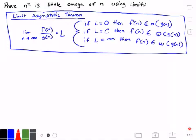Hello everyone and welcome to this video on algorithm analysis and more specifically on little omega. In this video we want to prove that n squared is little omega of n using limits.